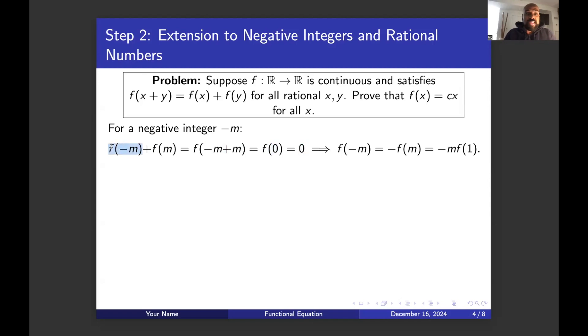So f of negative m is actually the negative of f of m. But we know what f of m is. So using the fact here that f of negative m is negative f of m, and since m is a positive integer, we know that f of m is m times f of one, we get that f of negative m is negative m times f of one.